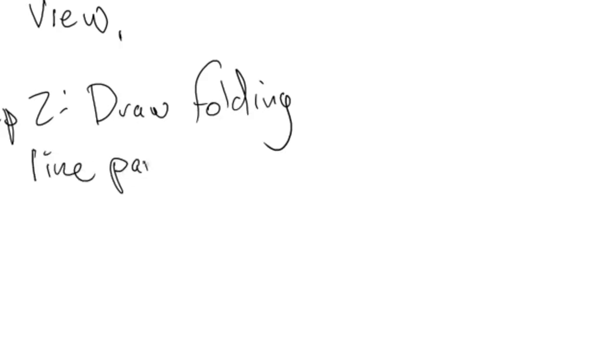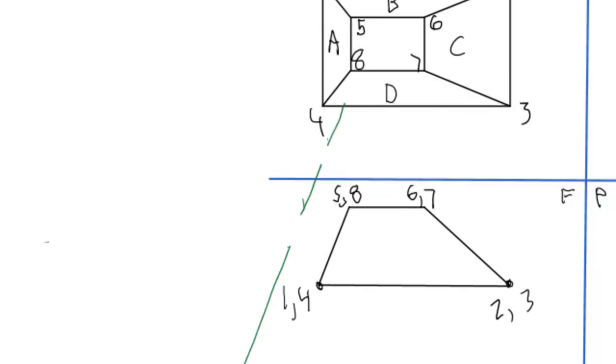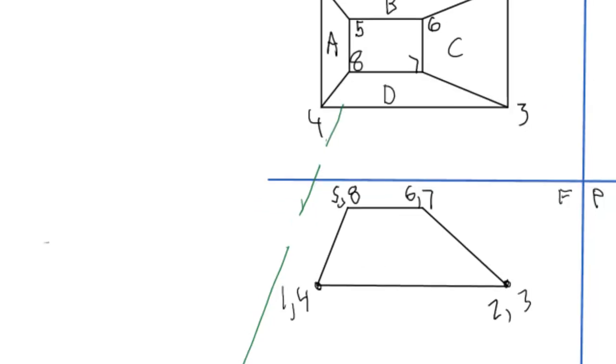Draw a folding line parallel to the edge view. And now you'll see why I needed that room over there. Draw a folding line parallel - here's a folding line.